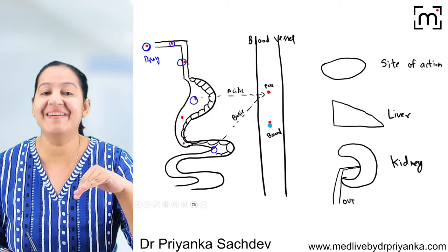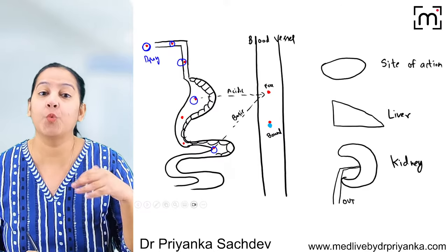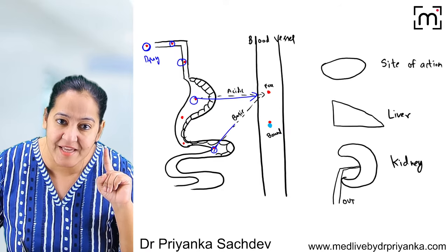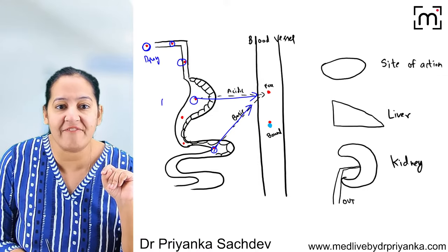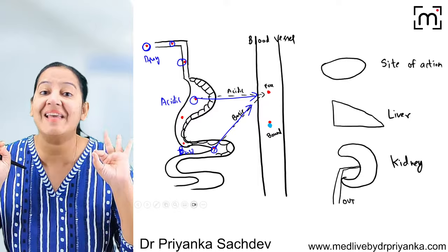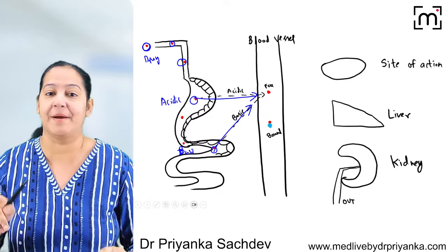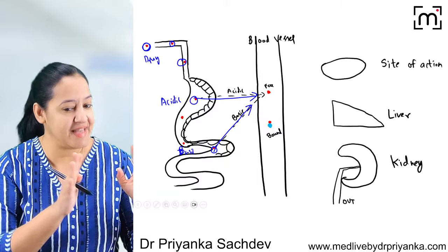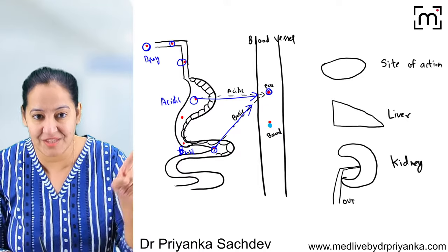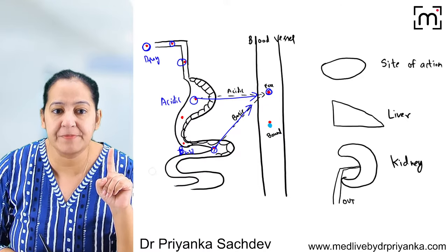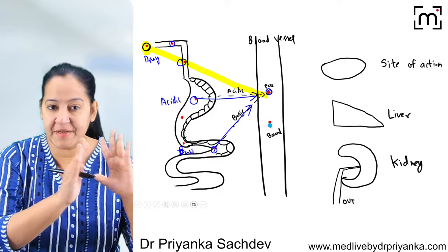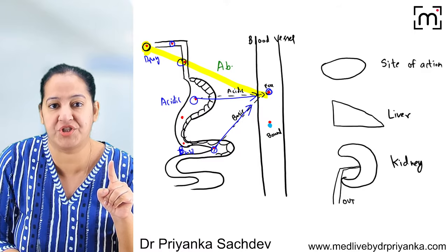Now there's a rule — will the drug be absorbed from the stomach or intestine? It depends on whether the drug is acidic or basic. Weakly acidic drugs are absorbed from an acidic medium (stomach), and weakly basic drugs are absorbed from a basic medium (intestine). Whatever the drug, it ultimately gets absorbed and reaches the circulation. This movement from the site of administration to the circulation is known as absorption.